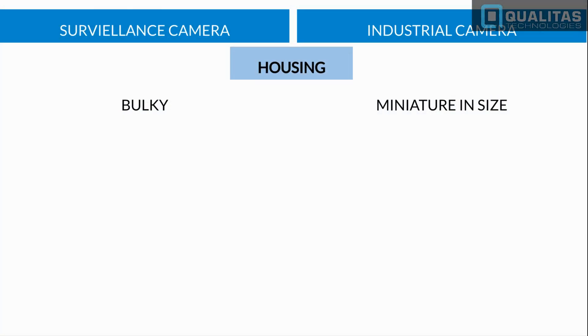One is the housing. Industrial cameras are often very miniaturized so that they fit into small places. Surveillance cameras, on the other hand, are often bulky with housing suitable for all weather conditions, especially for outdoor use.